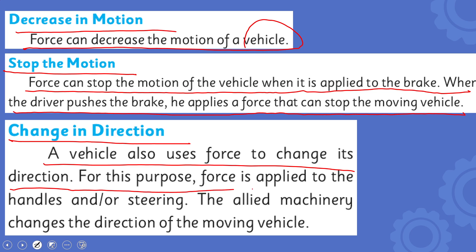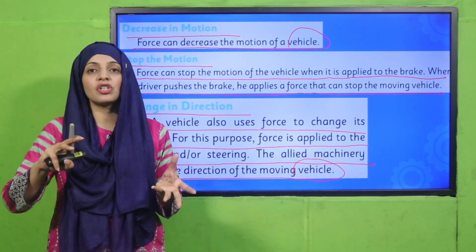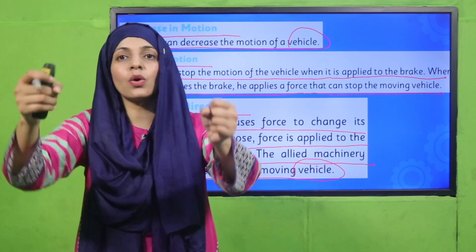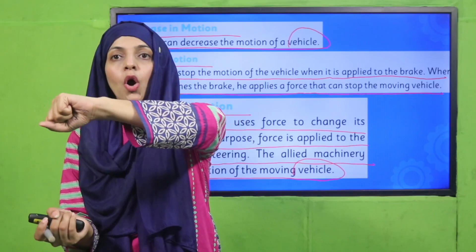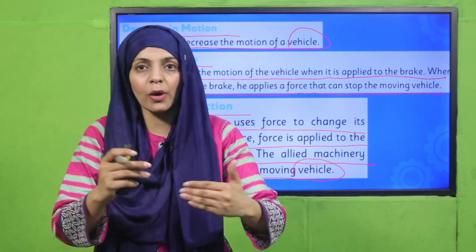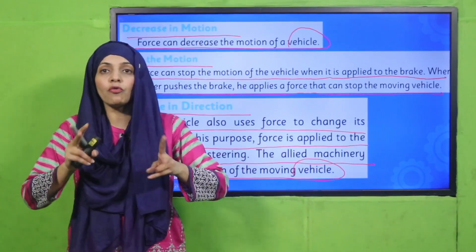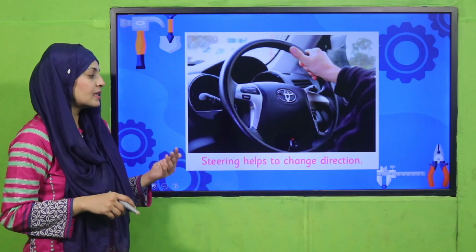Change in direction: a vehicle also uses force to change its direction. For this purpose, force is applied to the handles or steering, and the allied machinery changes the direction of the moving vehicle. For example, if a car is going straight and you turn the steering to the right side, one force is applied on the steering and the machinery turns the car to the right side, changing its direction.